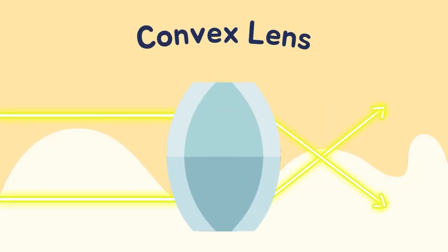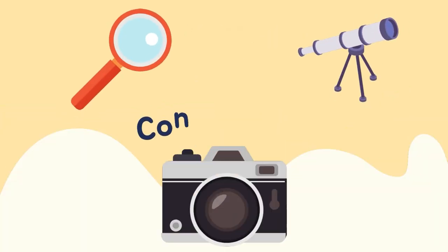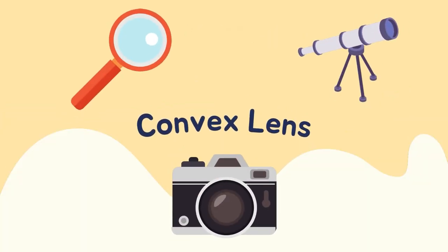Convex lenses bend the light and make them meet at a certain point. Objects that use convex lenses are magnifying glasses, telescopes, and cameras.